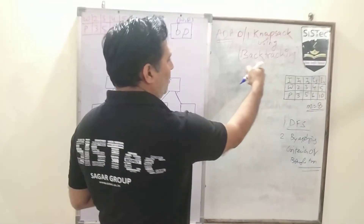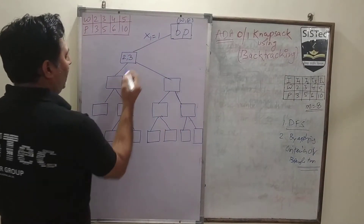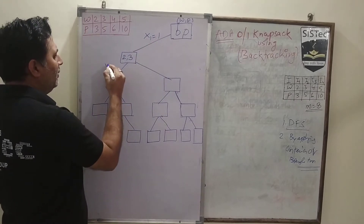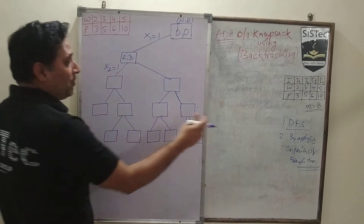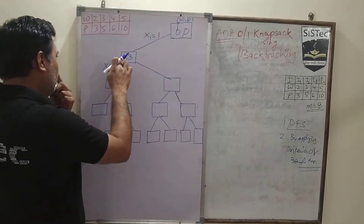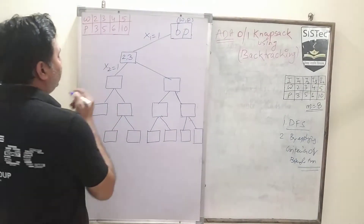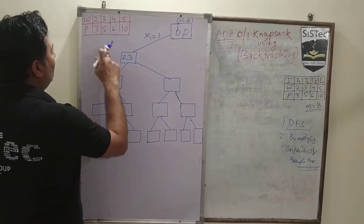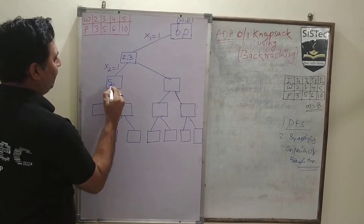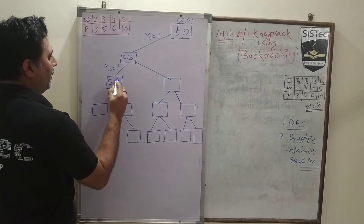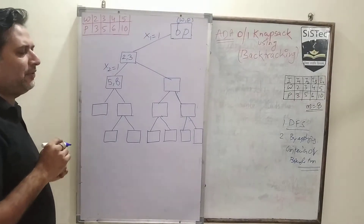As with backtracking, we will explore the solution space tree in DFS manner, so we will move further. After considering the 1st weight, we will see the 2nd weight — can we consider it or not? As capacity is 8, we can take this particular weight. If we add the next weight, the total weight becomes 5 and the profit will become 8. Still we are satisfying the constraint.